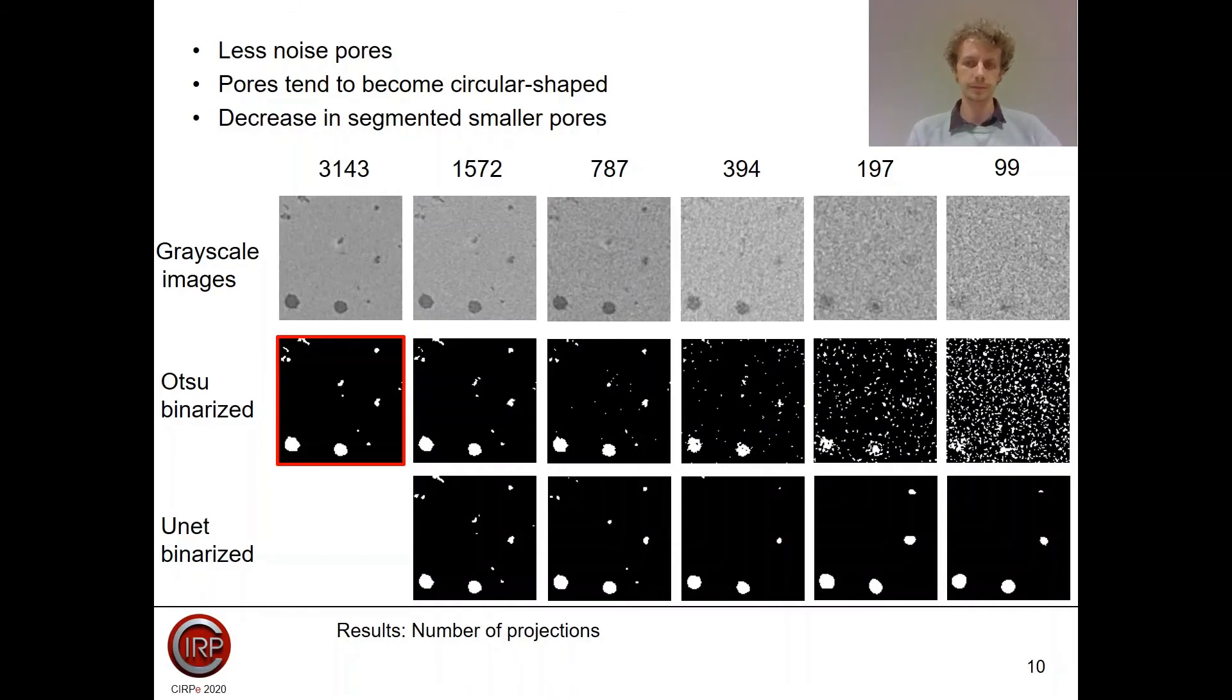This is a qualitative example. In the top row, you can see the grayscale images and the network will segment those images. In the second row, you see the segmentation results of an OTSU threshold algorithm, and in the third row, you see the segmentation results of the neural network. The main conclusions that we can draw is that in the neural network, there is less noise present. If we start to reduce the number of projections, we see that there are less small pores detected, and also the pores in the scans with very limited number of projections tend to become more circular shape.